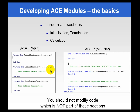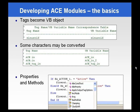Those sections are sometimes used if you need to do extra steps at the beginning or after an ACE module runs. Whichever version you use, you're going to have these three sections, and you really shouldn't modify code outside them. The code outside these sections is a lot of boilerplate that ACE needs to run, and you can break things very easily by modifying those areas.